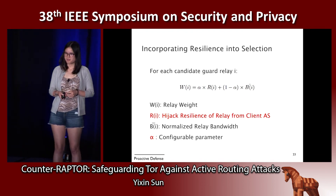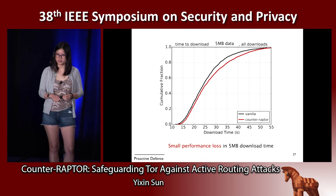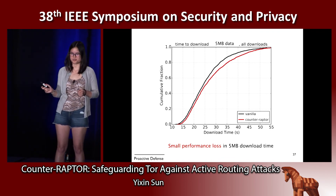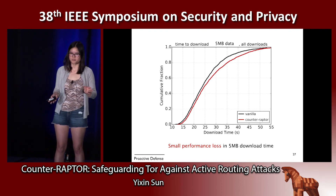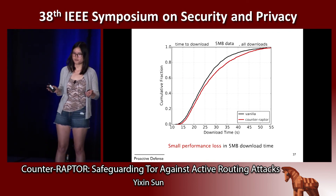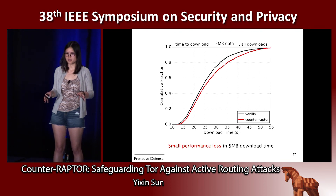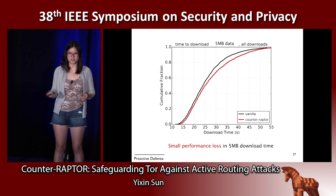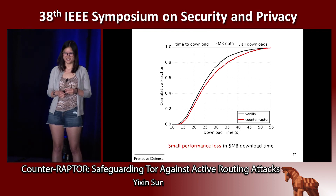Question: You mentioned you did real-world experiments ethically — can you say a few words about what you mean? Answer: We used the PEERING framework, which was also used by another paper at the conference. We have a machine set up at Princeton with VPN tunnels to two different ASs. We make an announcement through one AS, then make the same announcement through another AS we have a VPN tunnel with. The announcement is for a dedicated IP block temporarily owned by us for the experiment, so no one else is using it and we are only hijacking our own traffic.